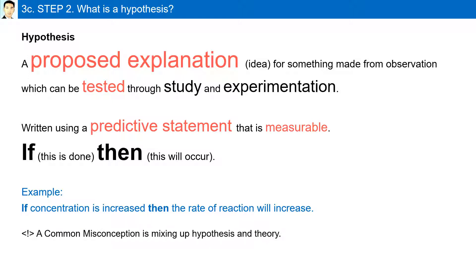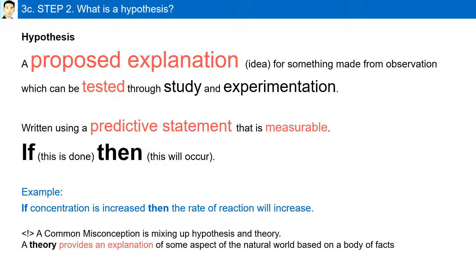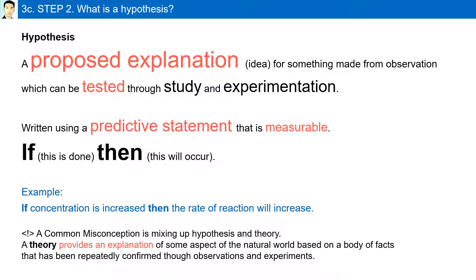A common misconception is mixing up hypothesis and theory. A theory provides an explanation of some aspect of the natural world based on a body of facts that has been repeatedly confirmed through observations and experiments. While a hypothesis is just a proposed explanation that has not been proven as yet.